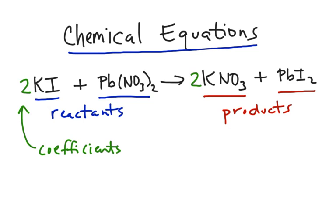Since there is no number in front of lead two nitrate, the assumption is that there's only 1. There's a coefficient of 2 in front of potassium nitrate. That means we have 2 formula units of potassium nitrate. And we also notice there's no coefficient in front of lead two iodide, so that means we assume there's only 1 formula unit of lead two iodide. So that's an example of coefficients.